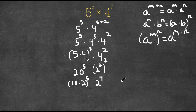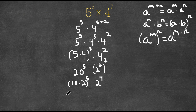So now remember we're going to use the property a to the power of n times b to the power of n equals a times b to the power of n, but we're simply reversing it. So we're going to convert 10 times 2 to the power of 5 back to 10 to the power of 5 times 2 to the power of 5.